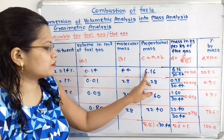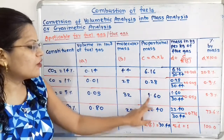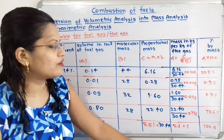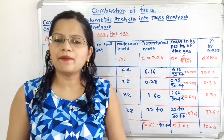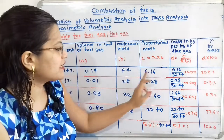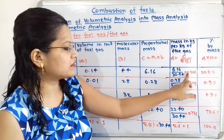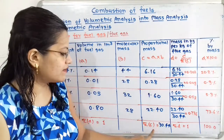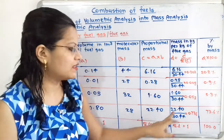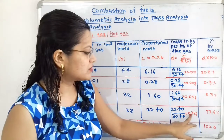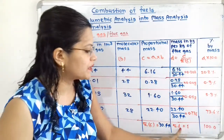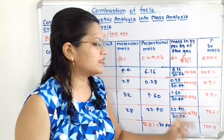For CO₂: 0.14 × 44 = 6.16. For CO: 0.01 × 28 = 0.28. For O₂: 0.05 × 32 = 1.60. For N₂: 0.80 × 28 = 22.40. Adding all these, summation of C = 30.44. For mass in kg per kg of flue gases, D = C ÷ summation of C: 6.16 ÷ 30.44 = 0.202; 0.28 ÷ 30.44 = 0.009; 1.60 ÷ 30.44 = 0.053; 22.40 ÷ 30.44 = 0.736. Adding all D values, summation of D = 1, which is verified.